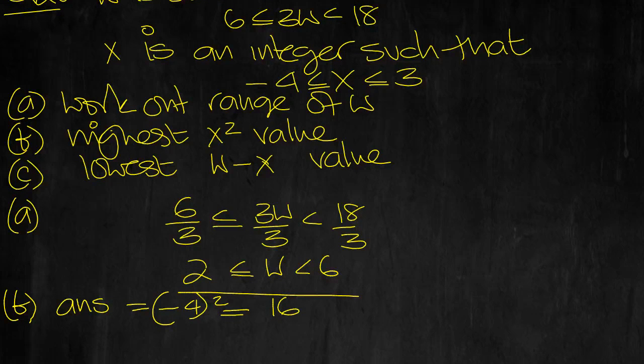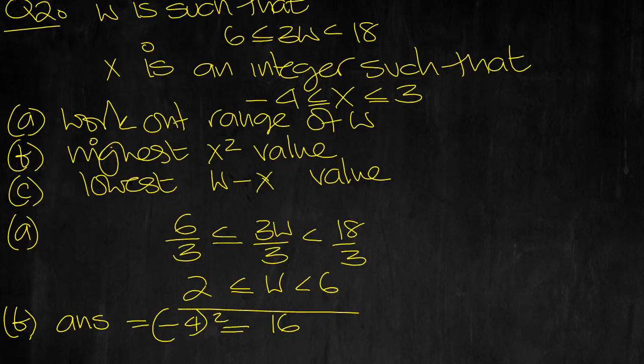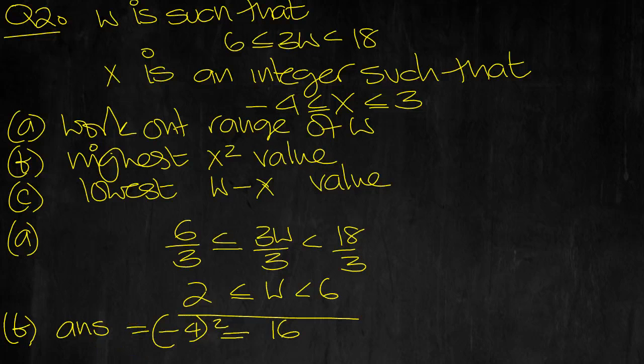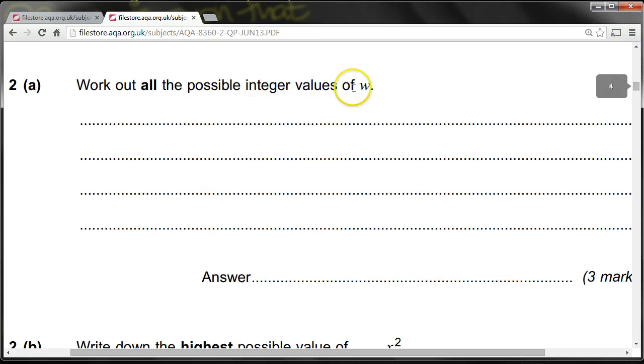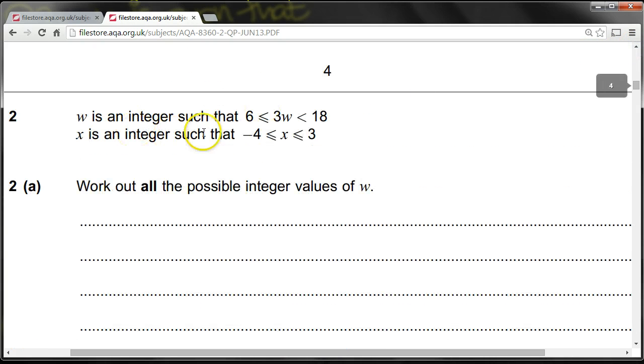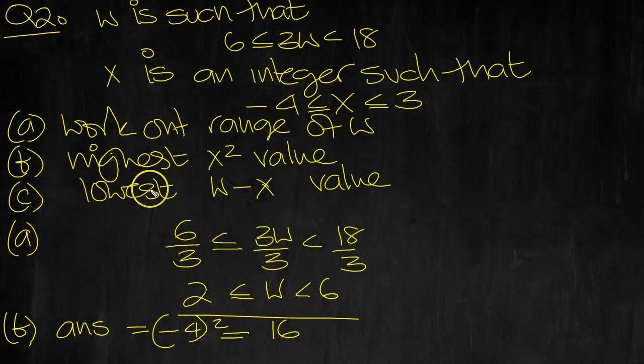OK. Work out the range of w. Right, let's go back to the question because we're on part c now. So let's just remind ourselves what the question actually says. Integer values of w. So we'd better work out that then. Because that was the inequality. So we've got the integer values of w in part a, not the range.